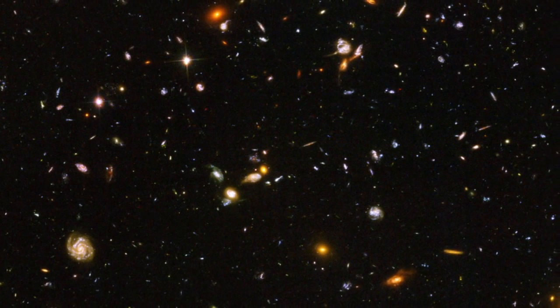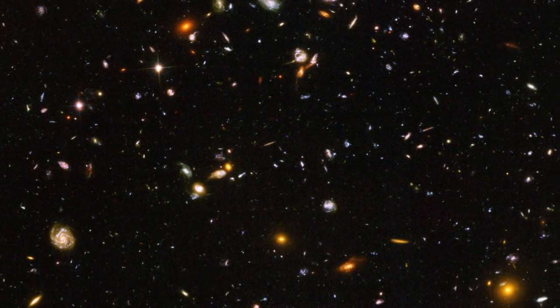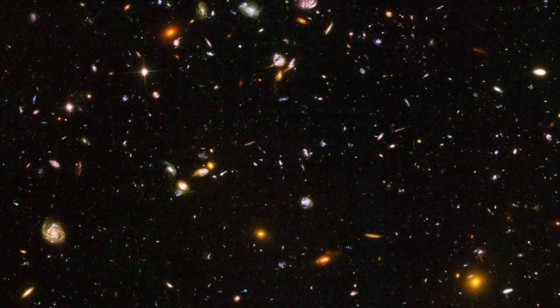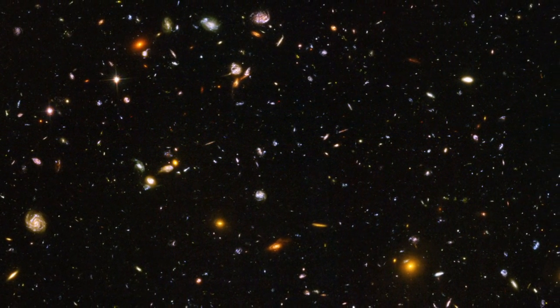The image was called the Ultra Deep Field, and that changed everything. We saw things that were much farther away than any previous observations had shown us. We were able to look back when the universe was very young and find objects that existed at that time.